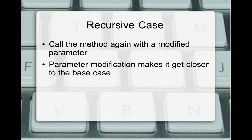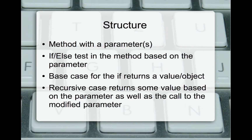Recursion should eventually reach the base case. If we never hit the base case, the recursive case keeps calling itself over and over, causing a stack overflow. The structure for recursion in Java is simply a method with parameters containing an if-else test. The if test is always the base case — if that condition is met, I return the associated value. If I have not met the base case, the else contains my recursive case, returning some modified value plus a recursive call to the same method with a modified parameter, so that modified parameter will eventually reach the base case.